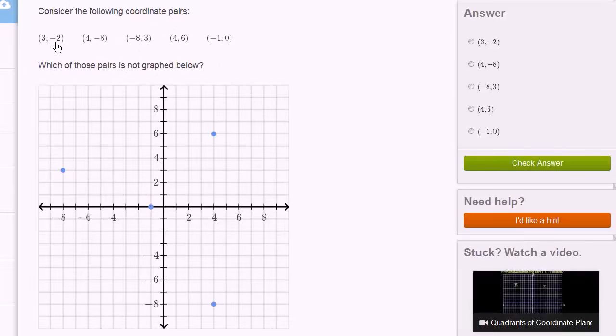So let's see, 3, negative 2. So 3, negative 2. Well actually, that looks like that first one is not graphed. So 3, negative 2 isn't graphed. And you can verify that all of these others do seem to be graphed.